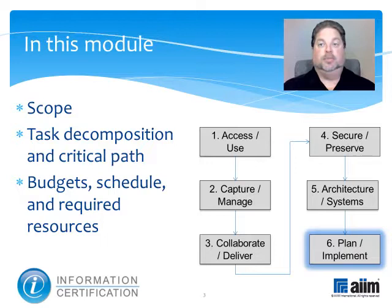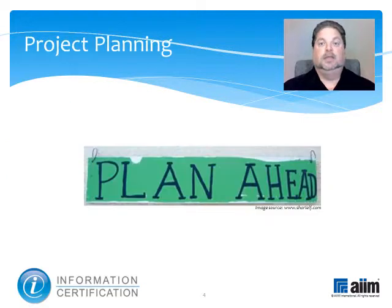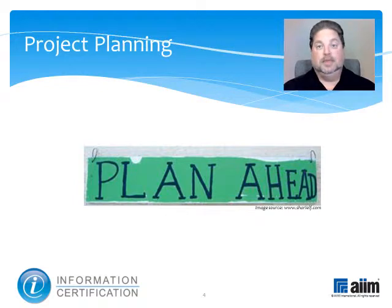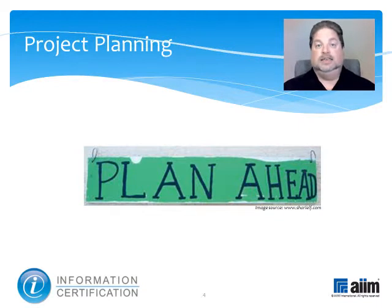In it, we'll explore the main elements of good project planning, including scope, task decomposition and critical path, budget, schedule, and required resources. Project planning involves a number of critical steps in which the initiative's objectives are initially broken down and preliminary estimates are prepared regarding costs, timetable, and required resources. Effective plans incorporate ideas from both the people executing them and those having it inflicted upon them. Hence, it's important that it includes ways to resolve conflicts between these two groups and among all other affected stakeholders as well.